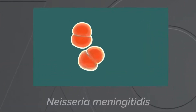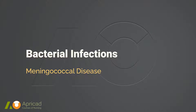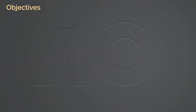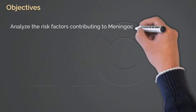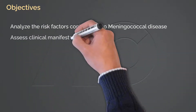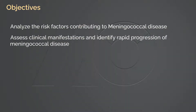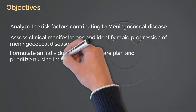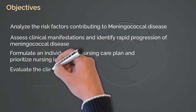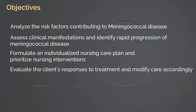Today we will talk about Neisseria meningitidis, which causes meningococcal infection. The objectives for this lecture are: analyze the risk factors contributing to meningococcal disease; assess clinical manifestations and identify rapid progression; formulate an individualized nursing care plan and prioritize nursing interventions; evaluate the client's responses to treatment and modify care accordingly; and provide appropriate patient education.